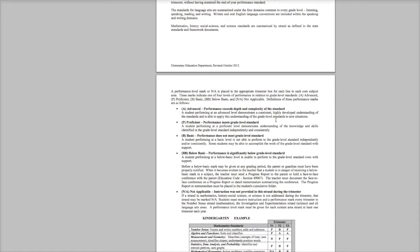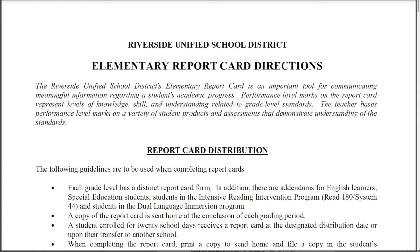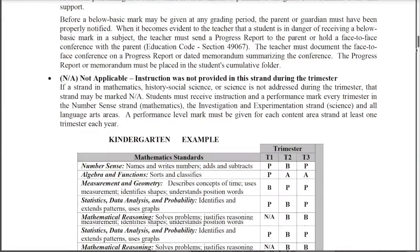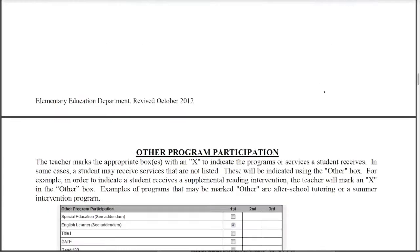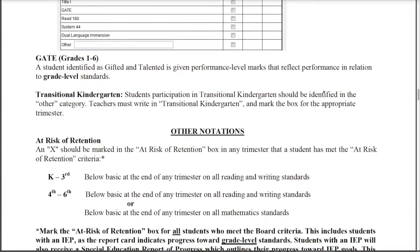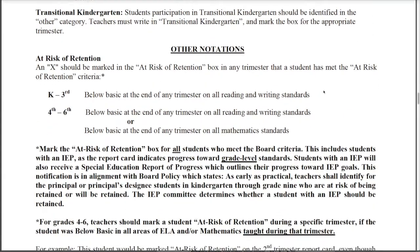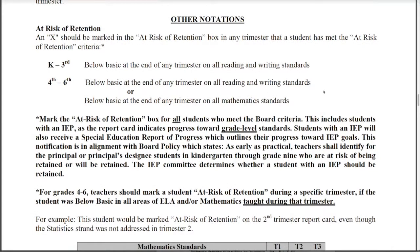What I want to focus on is a certain aspect of the elementary report card. Let me scroll down to it. When we get down to other notations, in this section it talks about the at risk of retention box. This is a very small box found on the report card but it's very important — it gives a lot of information both to the sites, to the district, and to parents about a student's performance.